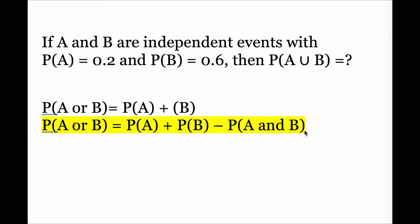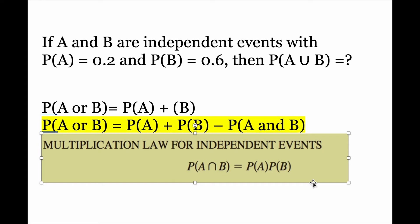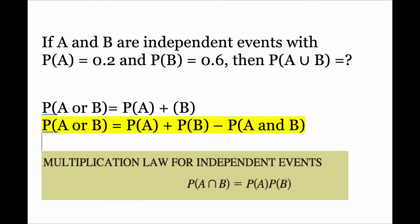In order to solve for probability of A and B occurring, recall your multiplication law for independent events. The multiplication law states: probability of A and B occurring equals probability of A multiplied by probability of B. So probability of A and B equals 0.2 multiplied by 0.6, which equals 0.12.